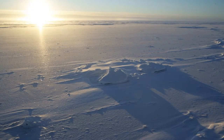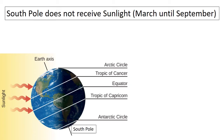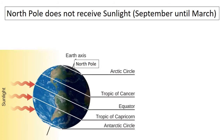At the North and South Pole, the rising and setting of the sun occurs only once a year. The South Pole does not receive any sunlight from March until September, while the North Pole does not receive any sunlight from September until March.